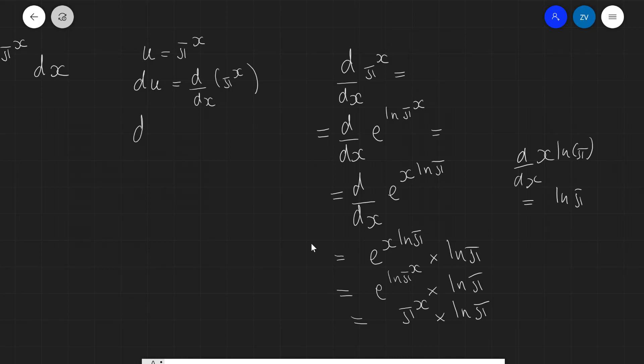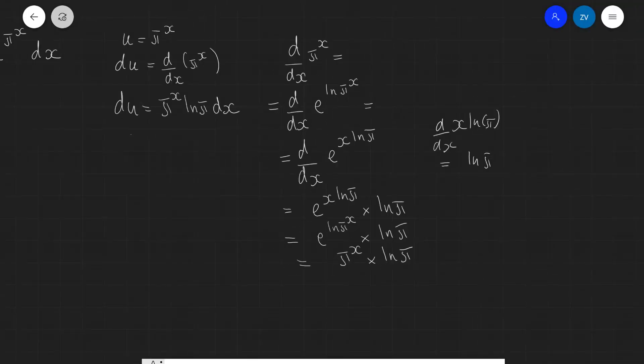Well, in that respect, du will be equal to the derivative of π^x with respect to x, which is π^x ln π dx. What we can do next is simply rearrange for dx in preparation for substituting back into our original integral. So this will be equal to du divided by π^x ln π.